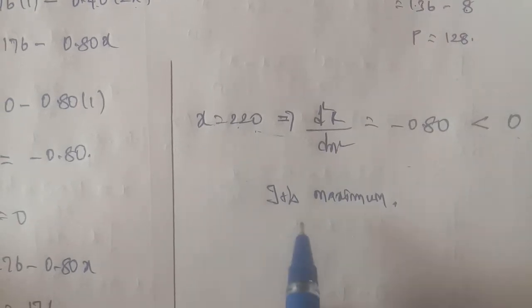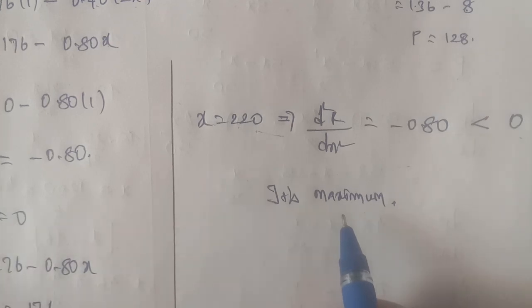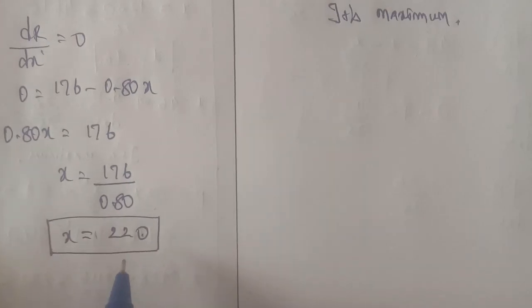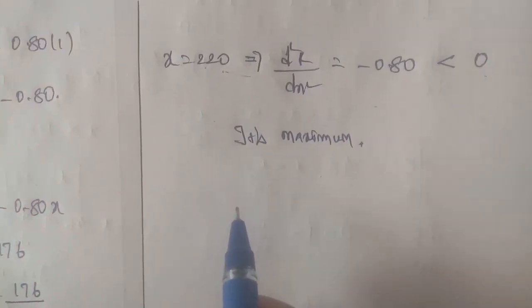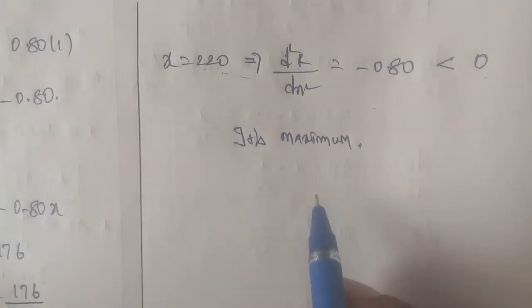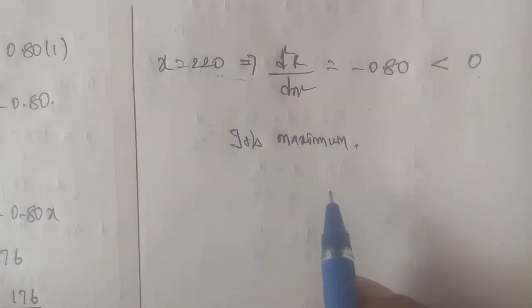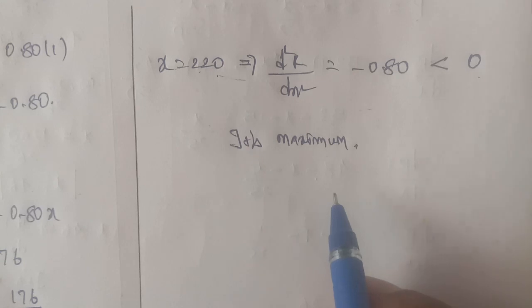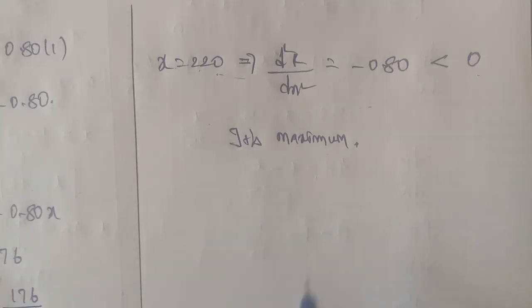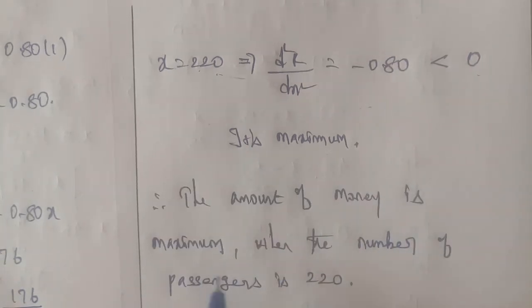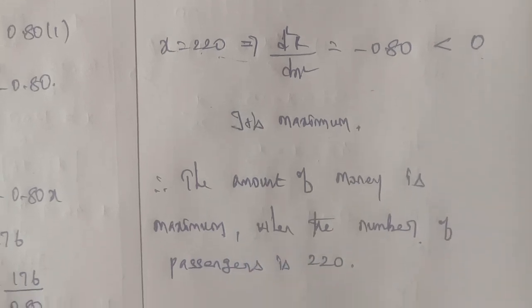How many passengers will give maximum profit? X is the number of passengers. The maximum income will be achieved at the maximum answer. Therefore, the amount of money is maximum when the number of passengers is 220. This is the final answer.